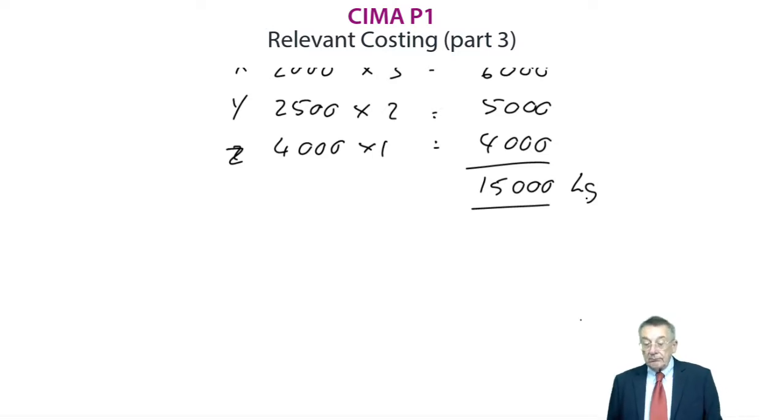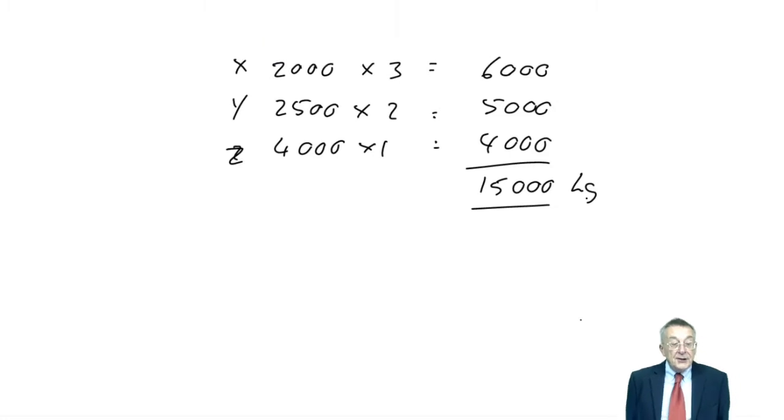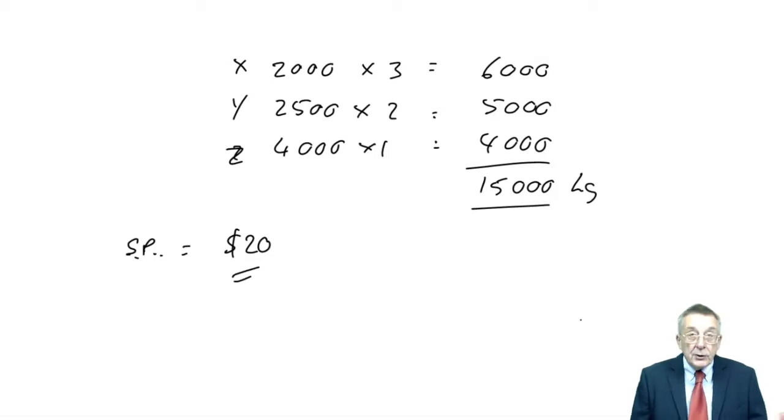Now, were it not for one missing line, we'd obviously have to restrict production of one or more of the products. But it turns out there's a buy-in price. Instead of making it ourselves, we could buy the units from elsewhere. So, product X, for instance, we either make ourselves and it costs $10 a unit, or alternatively, we could buy product X from elsewhere. It'll cost more, $13 a unit. Now, I am going to assume that the selling price of all these products is higher. Let's assume that the selling price of all the products is $20 for each product.